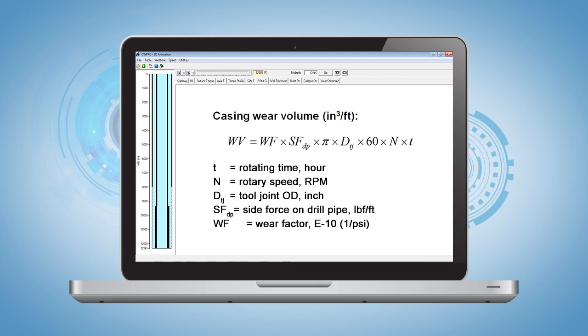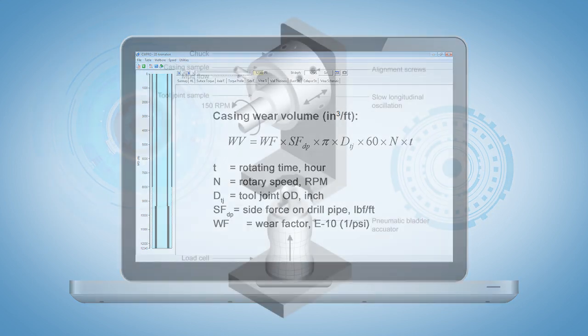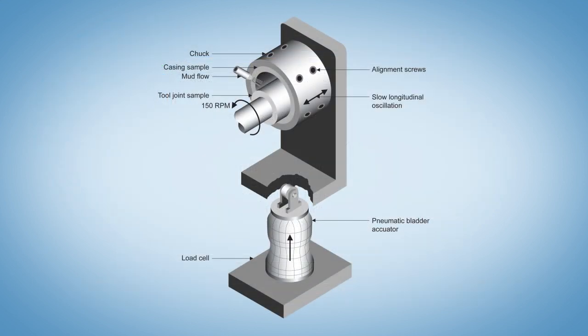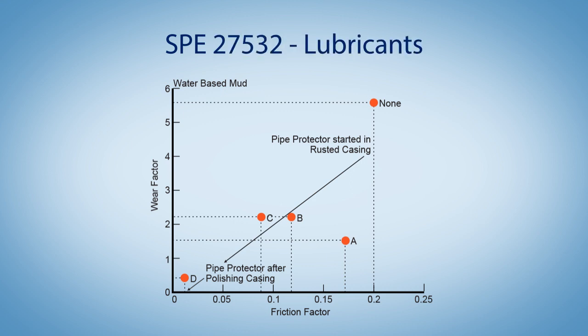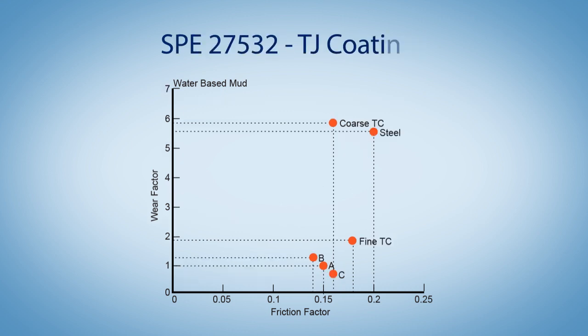The mathematical model relates the volume worn from the casing to the frictional work done by the rotating tool joint. The amount of energy transferred from drill pipe to casing is calculated through wear factor. Laboratory tests have provided substantial data for wear factor selection under various conditions of mud, tool joint coating, and others.